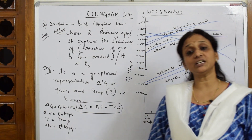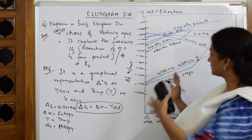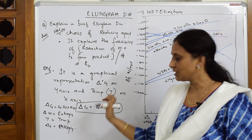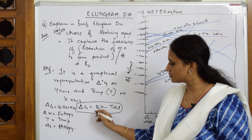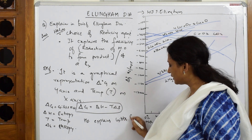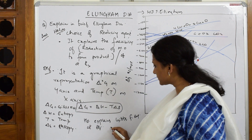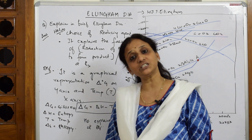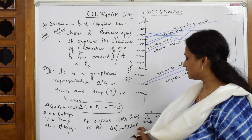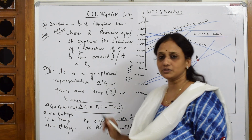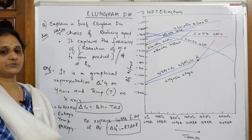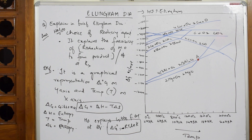Ellingham picked up the concept of Gibbs free energy at equilibrium state. At equilibrium we represent it as ΔG° — Gibbs free energy at equilibrium — which is equal to −RT ln K, where K is the equilibrium constant. This speaks about Gibbs free energy at a particular equilibrium temperature, and this is the basic foundation of the Ellingham diagram.